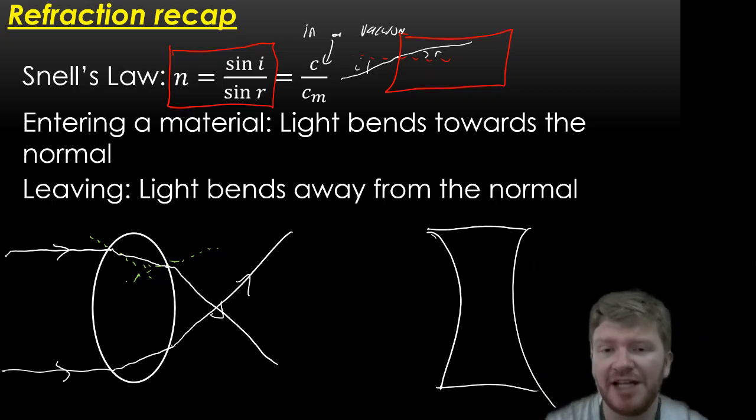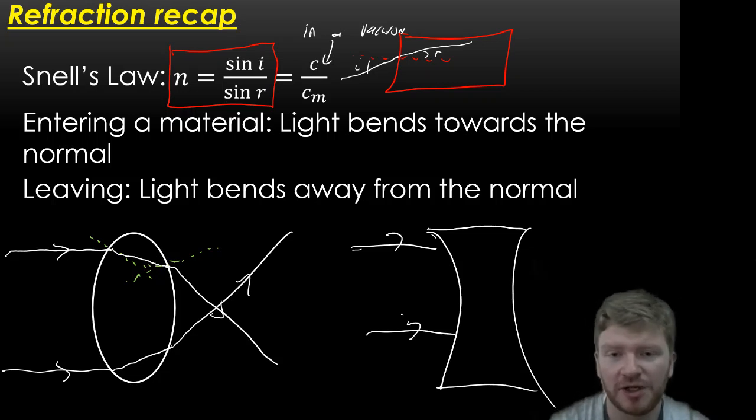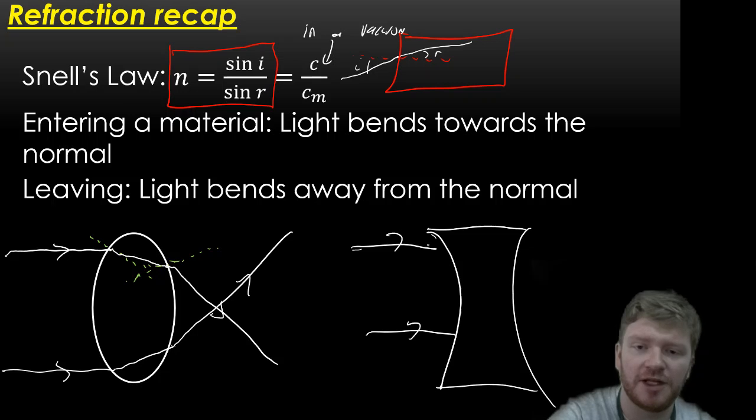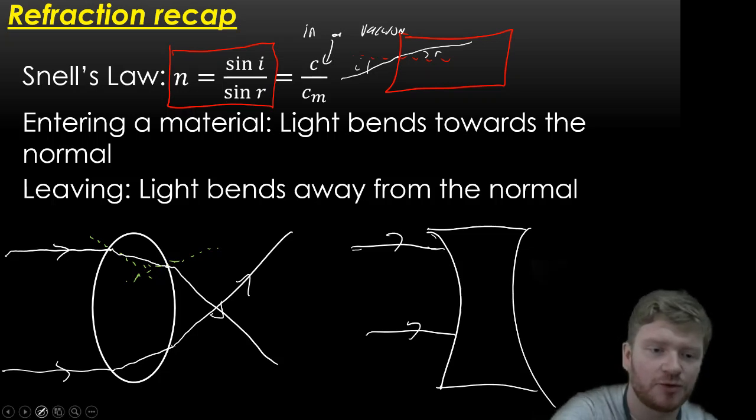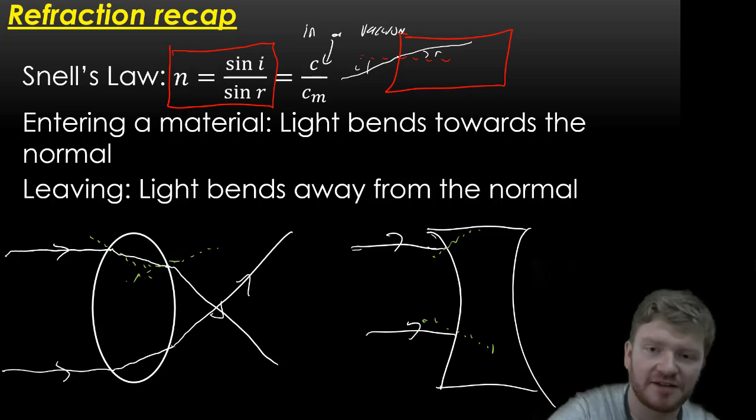So what I want you to think about now is what will the light do as it enters here. If I draw for you two light rays going like that, what are they going to do? And hopefully, what you should be able to see is, let's draw in our normals again. I'm going to have a normal this time going like that, and this time going like that. Light, as we said, will always bend towards the normal. And so that means that it's going to do this. It's going to move outwards. And actually, it's going to move even more outwards as it leaves.